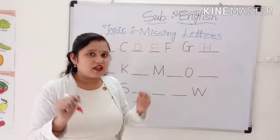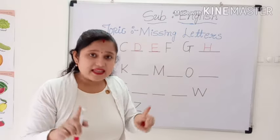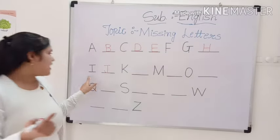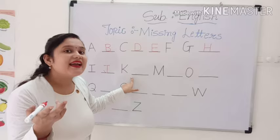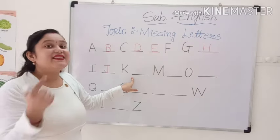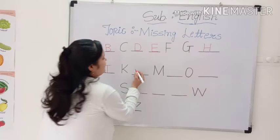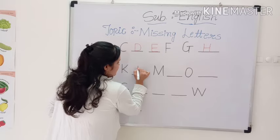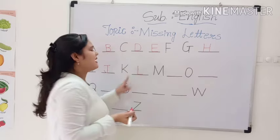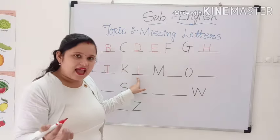You will try to sing with me. Okay? A, B, C, D, E, F, G, H, I, J, K. Yes. L, M, N, O, P. So, we will write here capital letter L. I, J, K, L. Standing line. Sleeping line. Makes capital letter L. I, J, K, L.